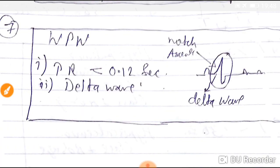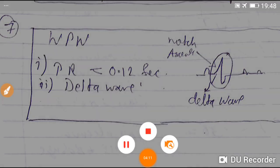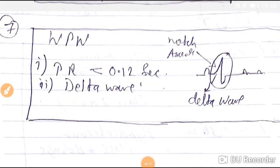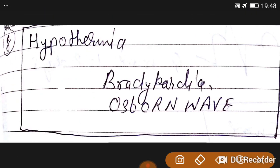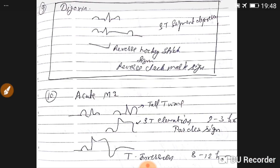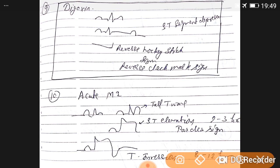WPW, Wolf-Parkinson-White syndrome: PR interval less than 0.12, delta waves. Hypothermia shows bradycardia and Osborn waves. Digoxin: we see reverse hockey stick or reverse check mark sign. This indicates digoxin use or ST segment depression.